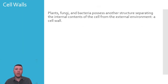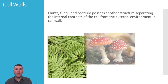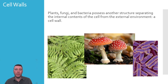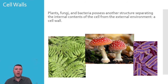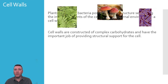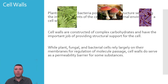In addition to cell membranes, some cells — like those of plants, fungi, and bacteria — have an additional boundary between the internal cellular environment and the external: the cell wall. Unlike the cell membrane's lipid composition, cell walls are constructed of complex carbohydrates. In plants, that carbohydrate is cellulose; chitin in fungi; and peptidoglycans in bacteria. Cell walls serve a primary function of providing physical support for the cell. Plant, fungal, and bacterial cell membranes carry the bulk of responsibility for regulating passage, but cell walls are selectively permeable for some substances, with the single most important factor being whether a substance is small enough to pass through.